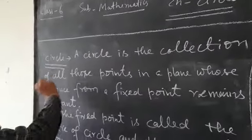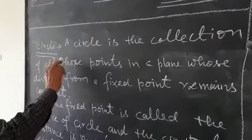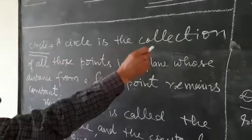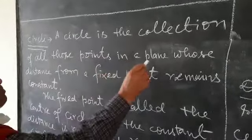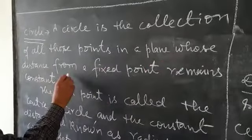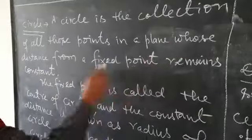Circle. What is a circle? Its definition will be: a circle is the collection of all those points in a plane whose distance from a fixed point remains constant.